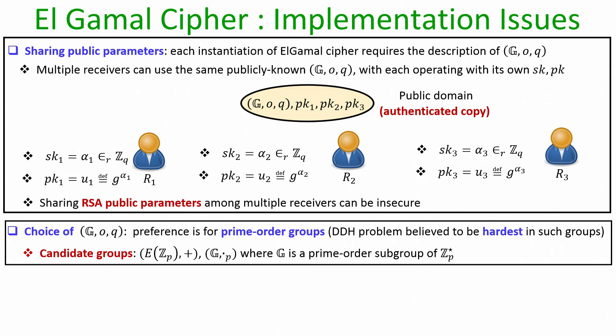The second concern is group selection. The ElGamal scheme is described with respect to an abstract cyclic group, but in practice we must select a concrete group. The candidate groups used in practice are: points on elliptic curves modulo a prime, or a prime-order multiplicative subgroup of Z_p*. These are popular choices because the DDH problem is believed to be hard in both these candidate groups.